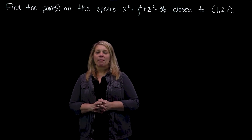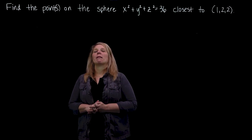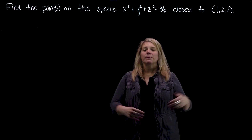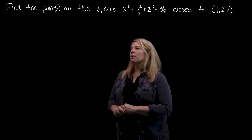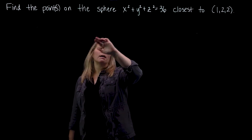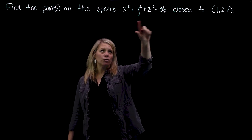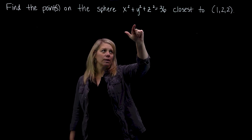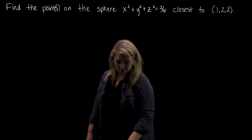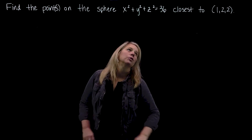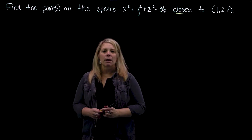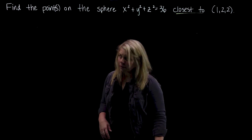We're going to look at another constrained optimization problem. It doesn't say constrained optimization when you read the word problem, but we want to find the points on a sphere — here's the restriction or constraint — closest to something. Here's what we want to minimize: something about being close, so a distance.